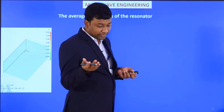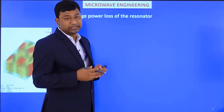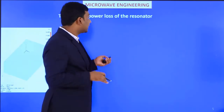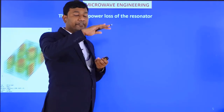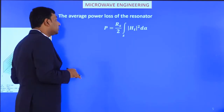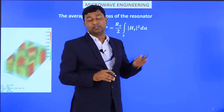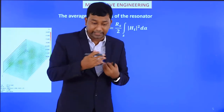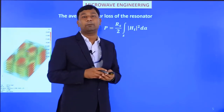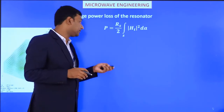Now we will see the average power loss of the resonator. As mentioned in the last unit, power loss in the resonator is due to two reasons: attenuation loss and conductor losses at the surface. The power loss is calculated as P_s equals (R_s / 2) times the surface integral of H_t squared dA, because at the surface of the resonator only the magnetic field is present — the electric field component becomes zero. R_s is the surface resistance.